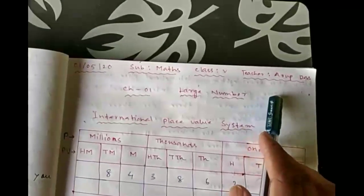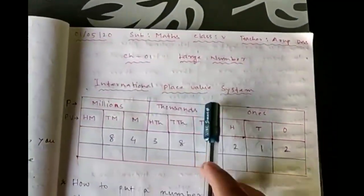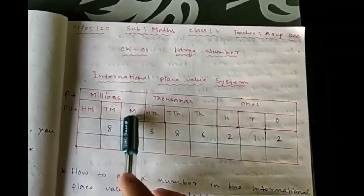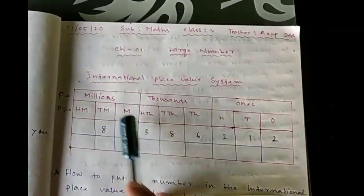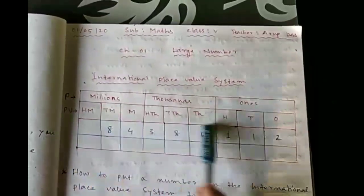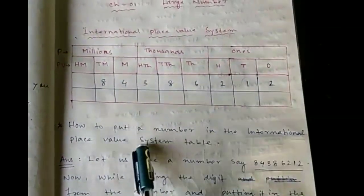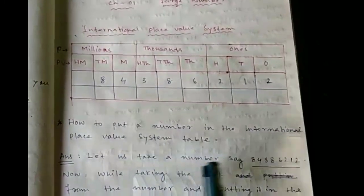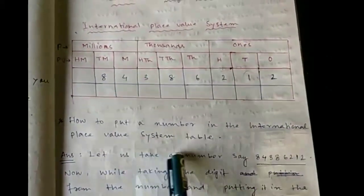Hello students, I am your master teacher Sir Aurope. I welcome you all. Today we learn the International Place Value System. This table is known as the International Place Value System. In this table there are three periods and nine place values.